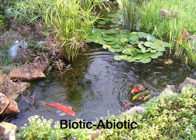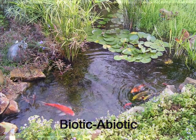This ecosystem consists of biotic and abiotic elements. Biotic elements are the living elements, such as the animals and the plants. Abiotic elements, which are also part of the ecosystem, are the non-living elements such as the water and the rocks.